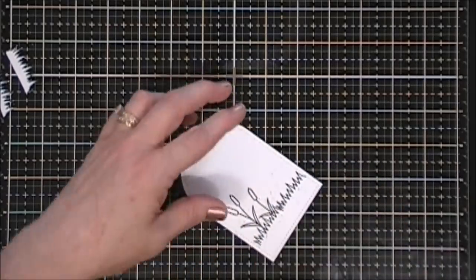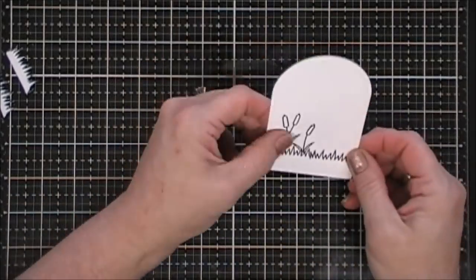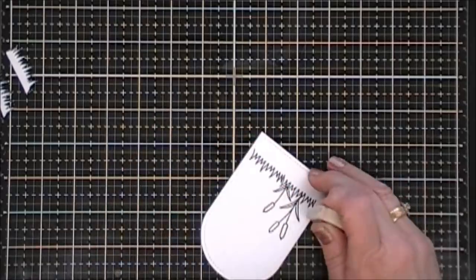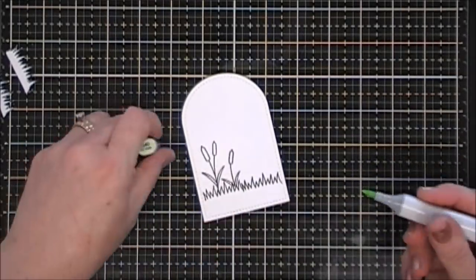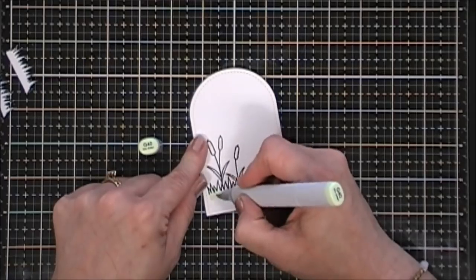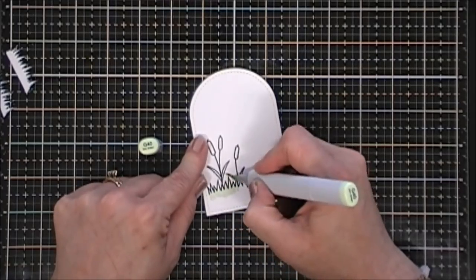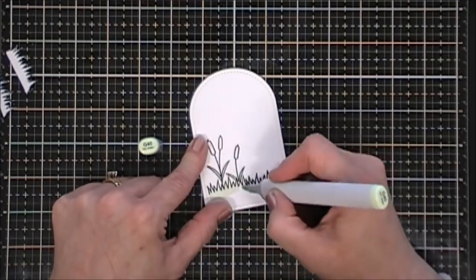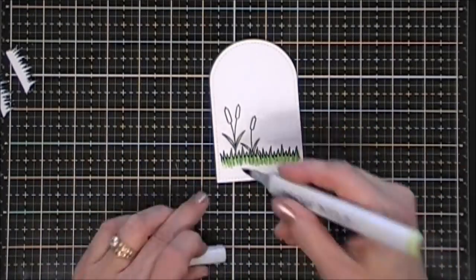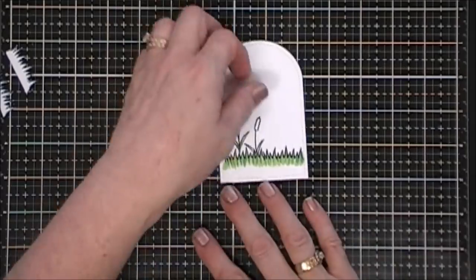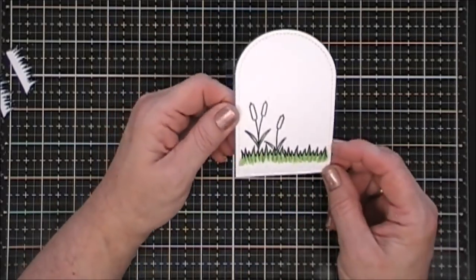I'm going to grab my Copic markers. We're going to color in my background here. I'm just using my eraser to erase my pencil marks. For my grass and the leaves on my little foxtails, I am going to use the same colors I used for the dragonfly bodies, starting off with the G40 and then going in with the G43 and then finishing off with G46.